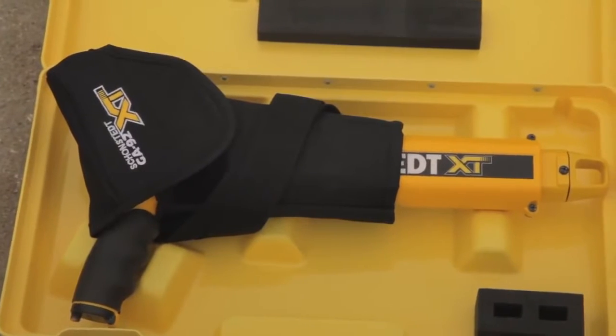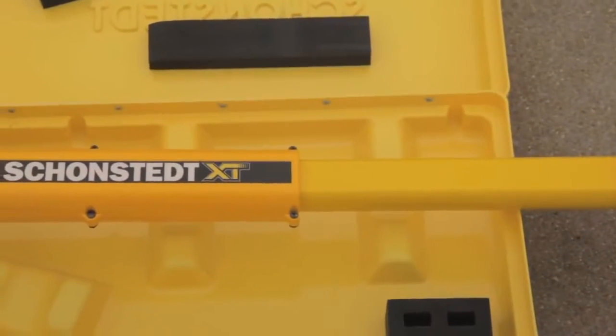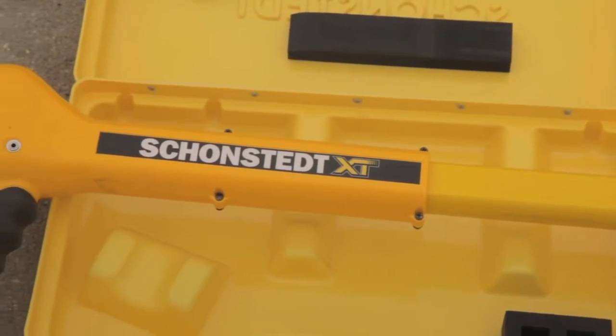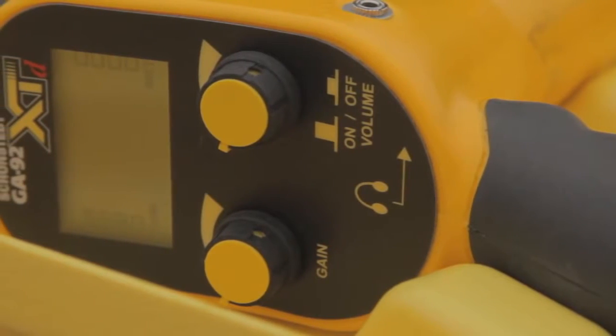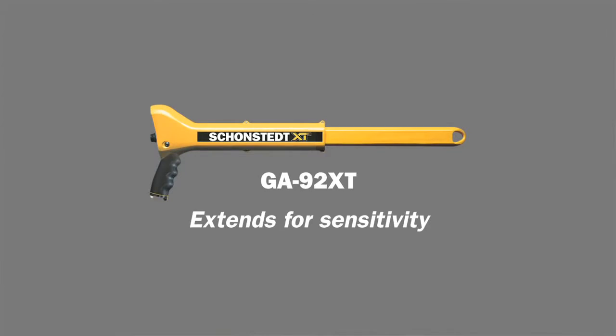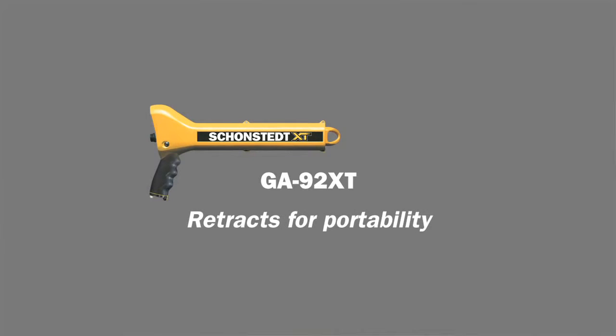The 92XTD is the short collapse portable unit. It therefore has the shortest tube and has the least amount of sensitivity. It is still good for utility applications and most survey pin targets and boundary markers. But for very small, petite targets, it would not be the best unit of choice.